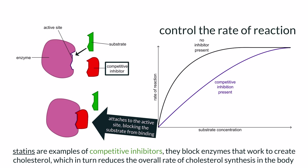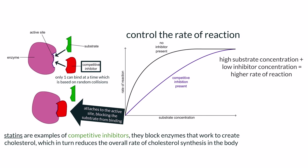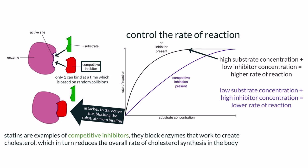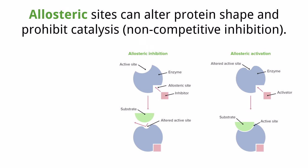Competitive inhibition can be used to control the rate of enzyme reactions. Because both the regular substrate and the competitive inhibitor need to bind to the active site to function, they are in direct competition with one another. The probability that each molecule will bump into the enzyme is the same, so it comes down to the amount of molecules present. If there is a high concentration of substrate and a low concentration of inhibitors, the enzyme reaction rate will be high. But if there is a low concentration of substrate and a high concentration of inhibitors, the inhibitors have a greater chance of bonding to the active site, reducing the overall rate of reaction.